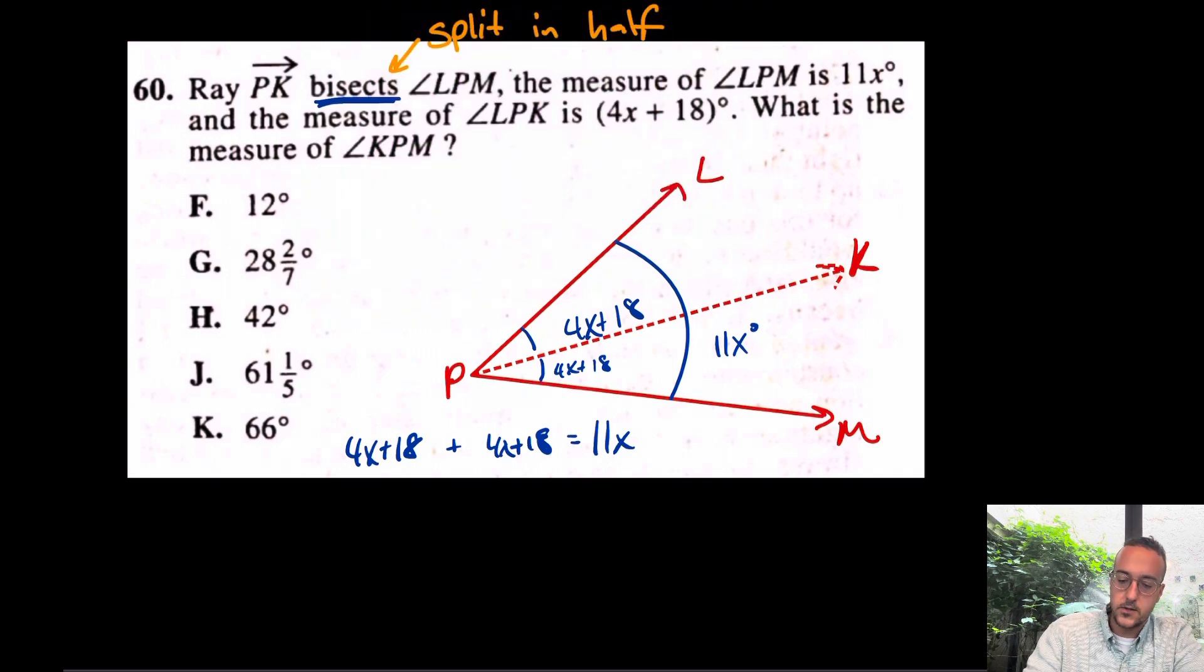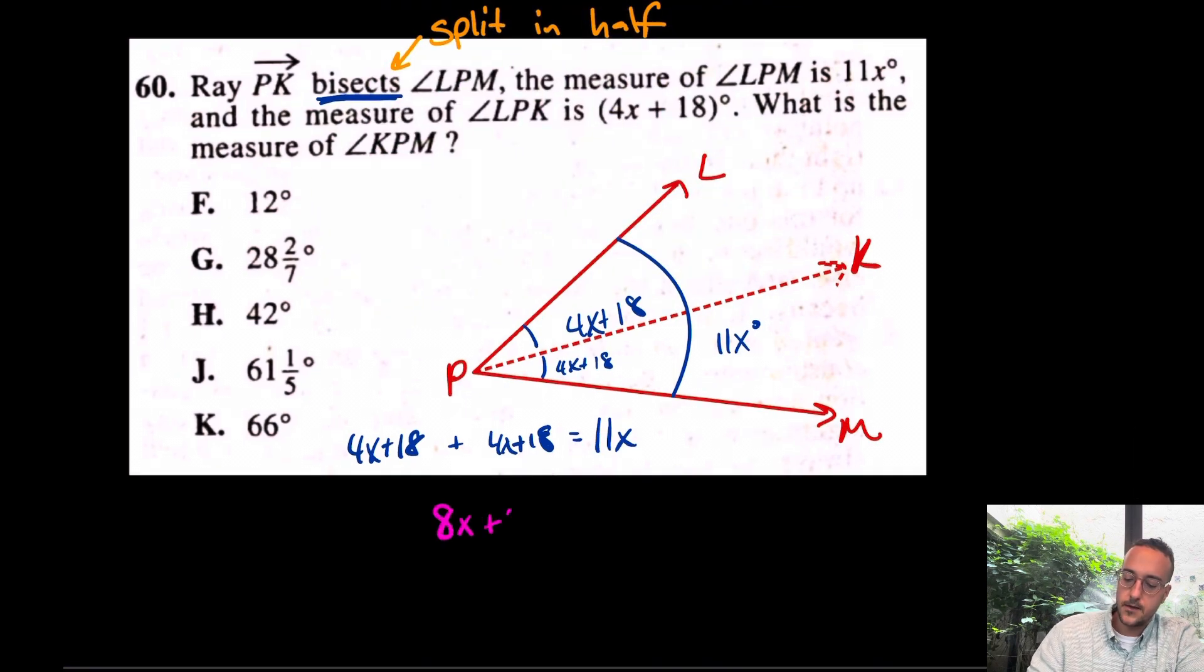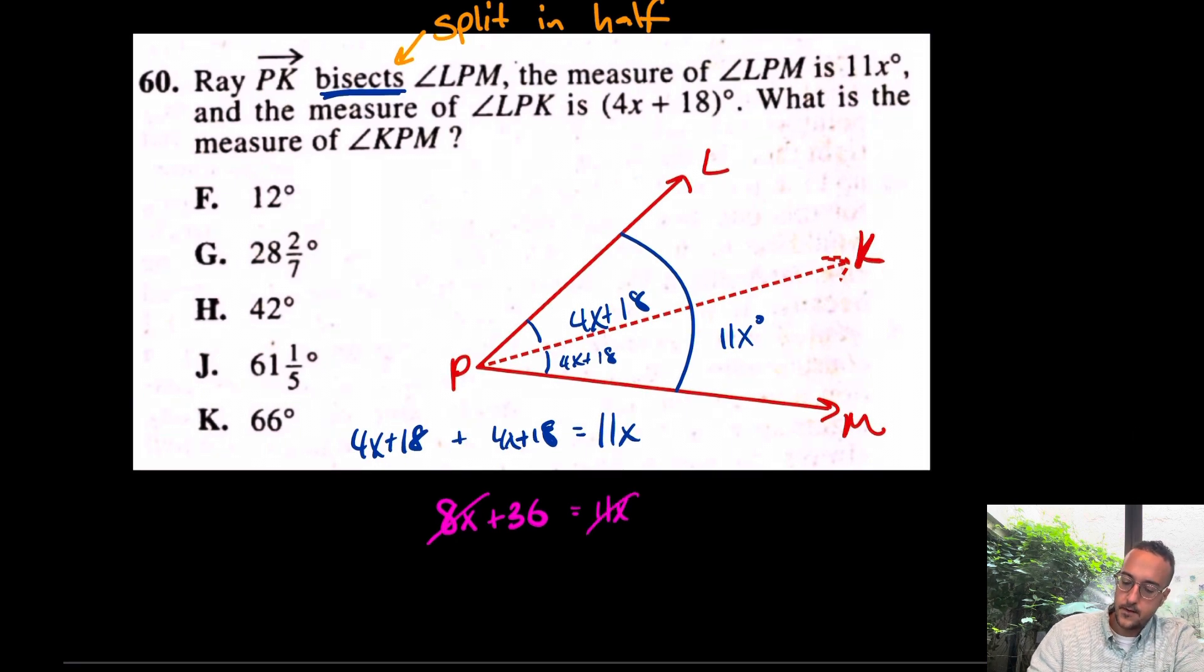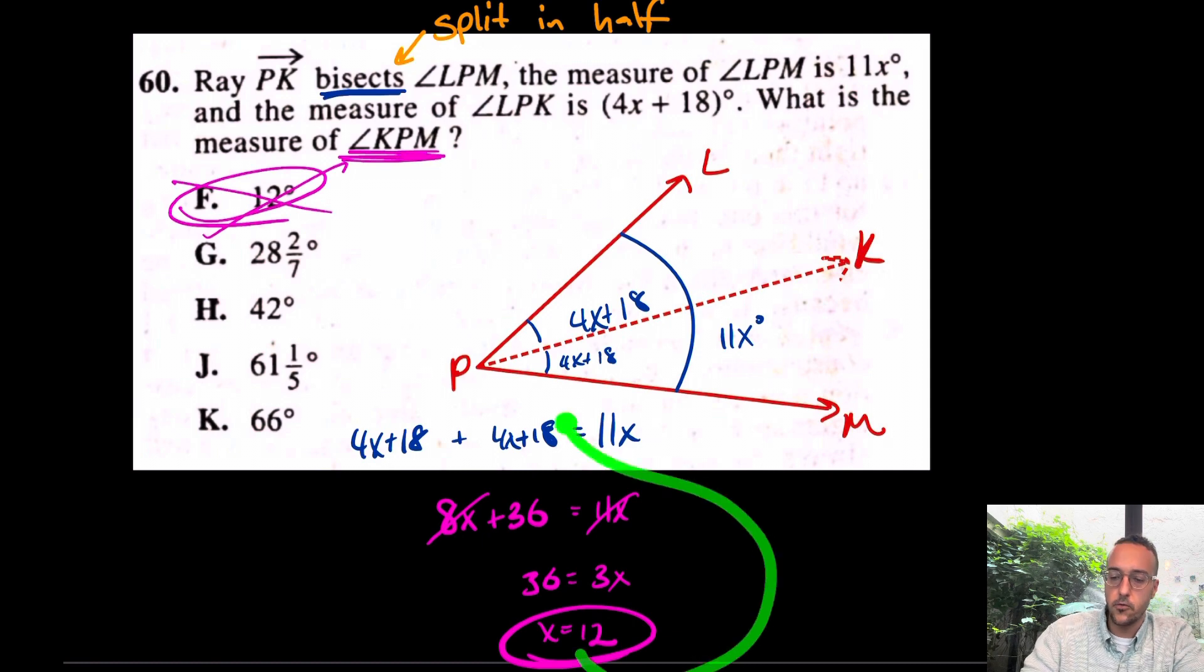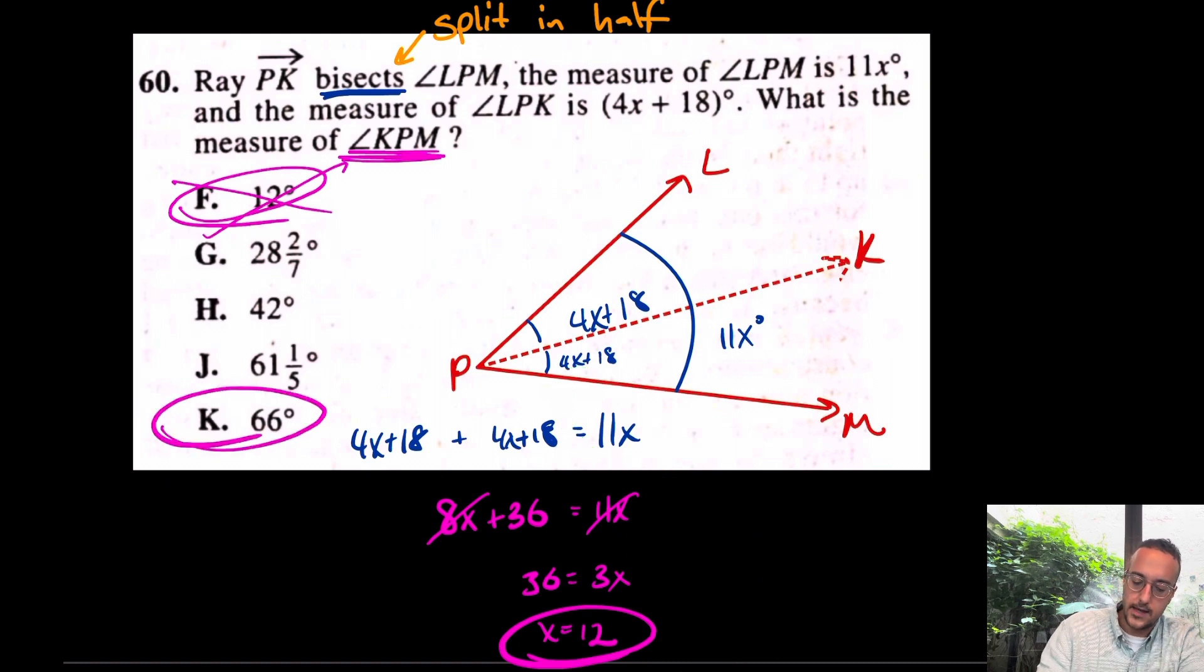Now, this is going to allow us to unlock the value of X. So we have 8X plus 36 equals 11X. Subtracting 8 from both sides, 8X at least. You have 36 equals 3X. X equals 12. But do not just choose answer choice F. It is not correct. Be careful. What are they asking for? They're asking for KPM. Again, they're asking for this angle here. So it is your responsibility to plug 12 back in for X. And when you do so, you get the answer. The answer is K.